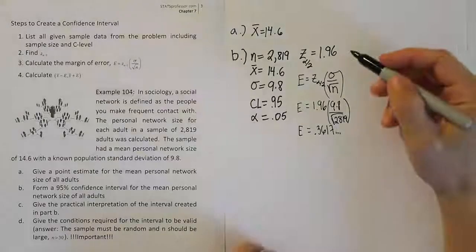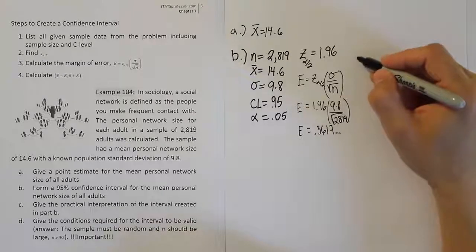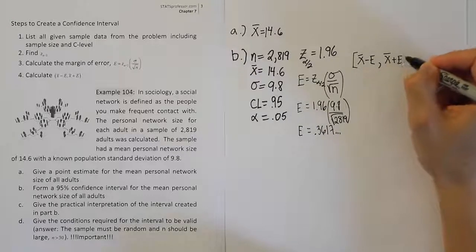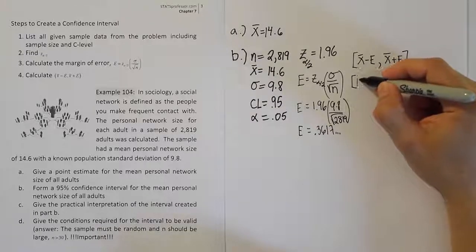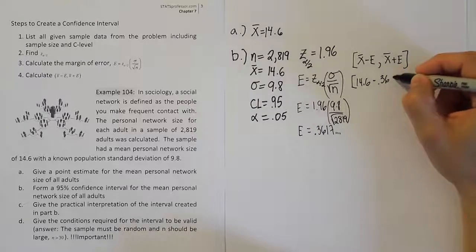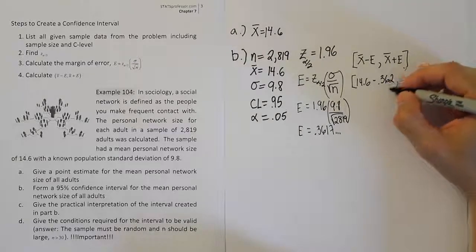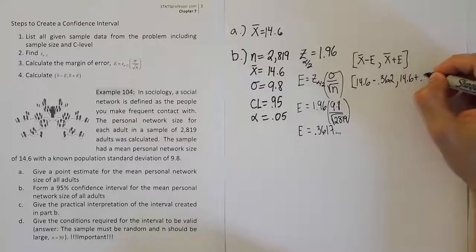The next step and the final step of the confidence interval is to fill in the following part, which is X̄ minus the error, comma, X̄ plus the error. So we just do a simple addition and subtraction problem. X̄ in this case is 14.6, and we'll subtract off that 0.362. I went ahead and rounded it just so it's not going to take up our whole page. Then it'll be 14.6 plus the 0.362.